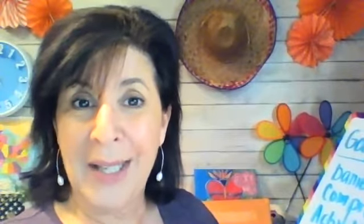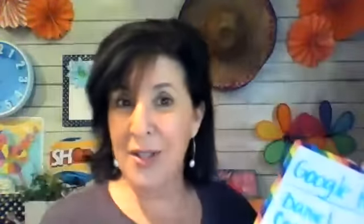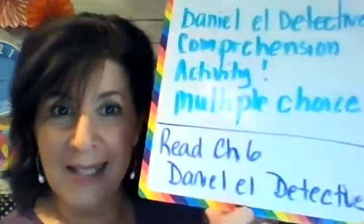I also created a Google Form for you to complete — it's multiple choice on Daniel El Detective comprehension for chapter five that you read last week. I'm going to send that to you as well, so return it to me completed. I think it's just 10 questions. I also want you to go ahead and read chapter six of Daniel El Detective. In the lesson, I gave you the pre-reading vocabulary that you can look at, see what the translation is, and know before you read.